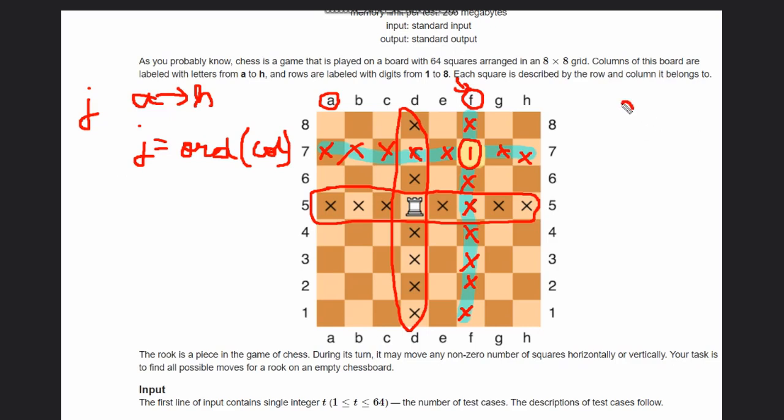Suppose we are given input as d5. In that case, column is d and row is 5. We will check the order of d here and the rest will be printed. And in case of f7, the order will be f, so column will be f and row will be 7. This is done.